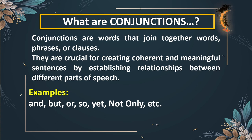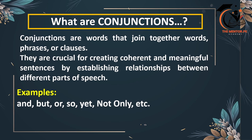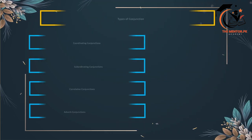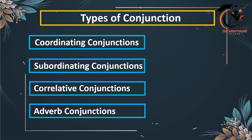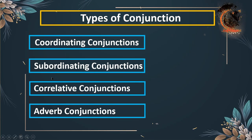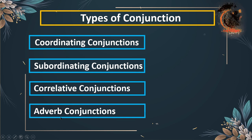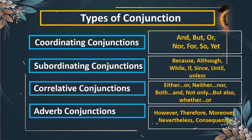Now let's discuss the different types of conjunctions. These types are: coordinating conjunctions, subordinating conjunctions, and correlative conjunctions or adverbial conjunctions. Now let's discuss them one by one.